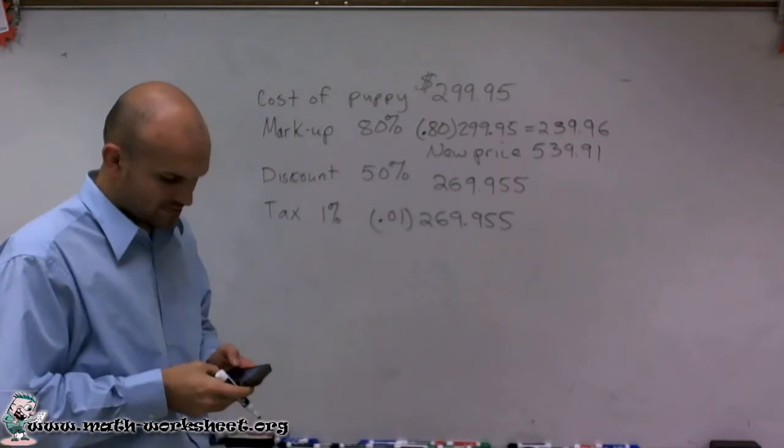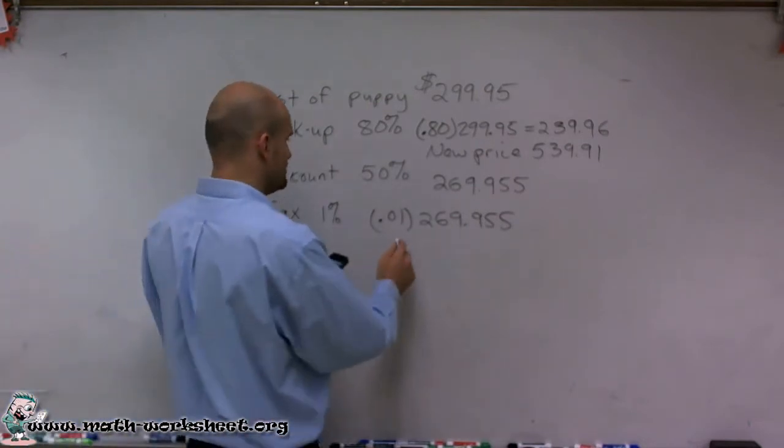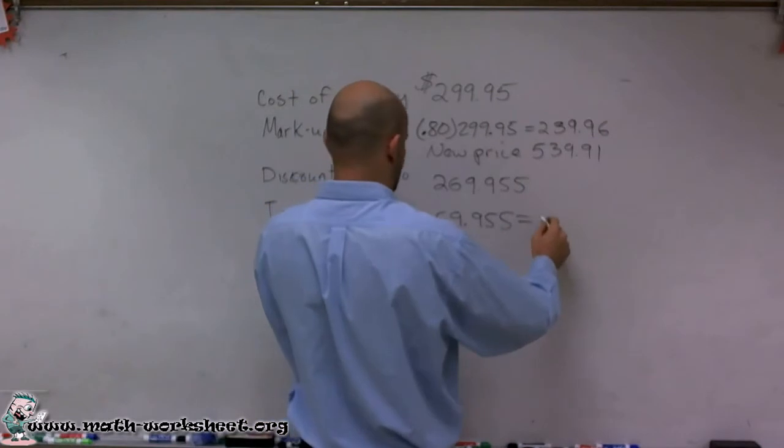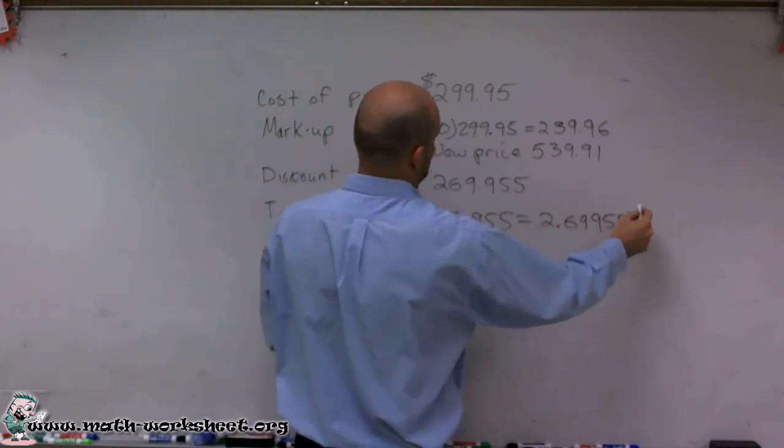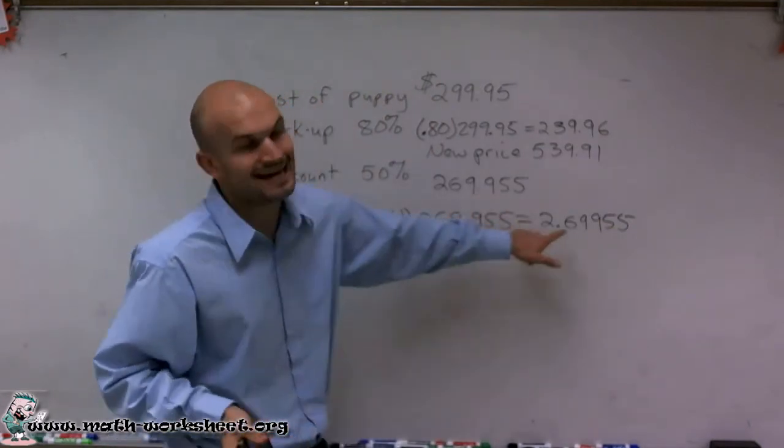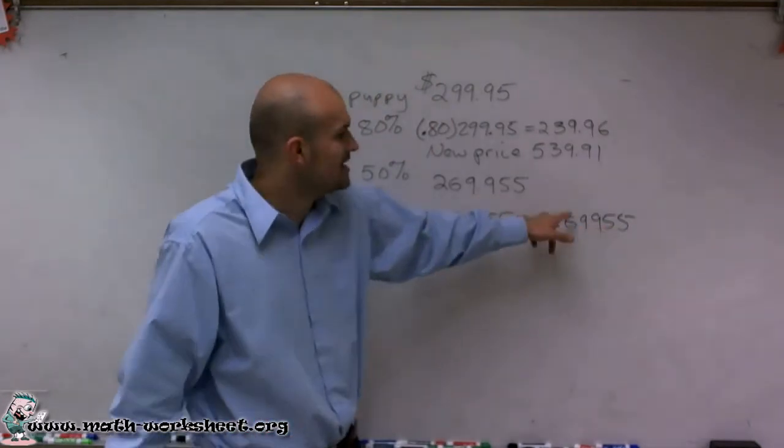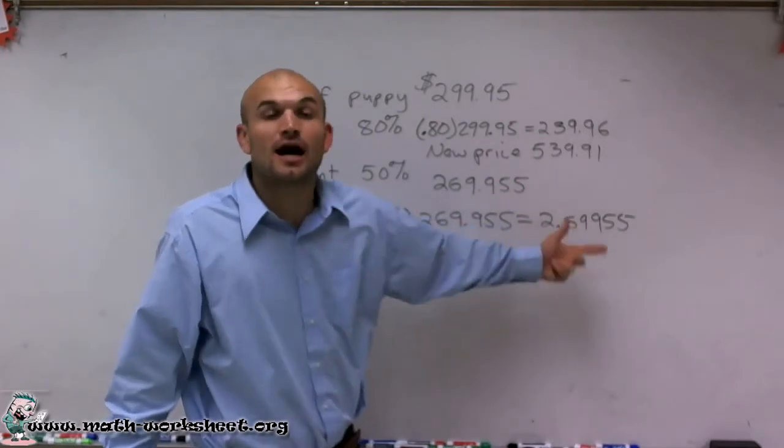So times 0.01, and what I get is $2.69, and we're just going to carry over our decimals. So that's going to be the amount of tax that you're going to pay. So you're going to pay $2 and roughly about 70 cents for the puppy.